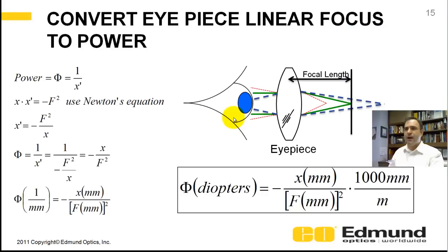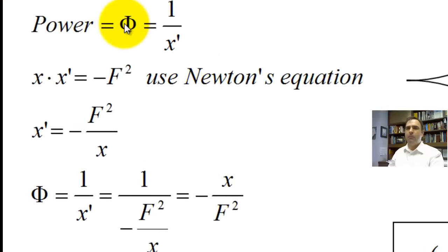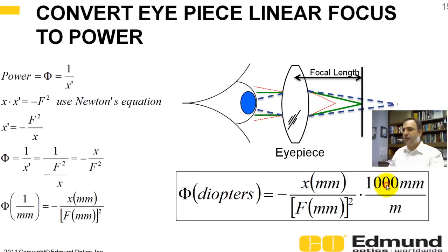Let's convert an eyepiece linear focus to power. Recall power, and sometimes people use phi as the Greek letter phi, and that's 1 over your object distance. And use Newton's equations, you re-manipulate. X prime equals this. You invert X prime, and you've got to multiply by 1,000 to convert your linear dimensions in millimeters to diopters, which is inverse meters. So your power in diopters is equal to how much you've defocused, divided by your focal length squared, times 1,000.